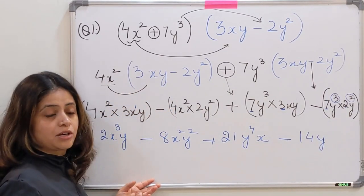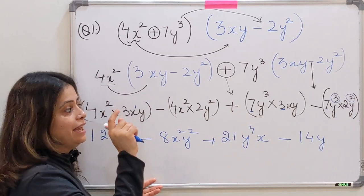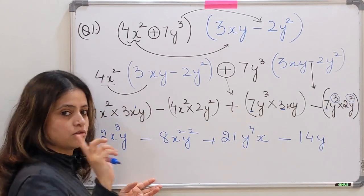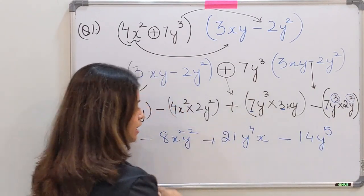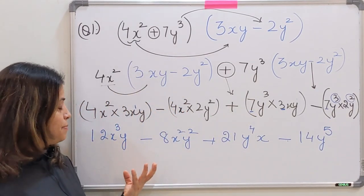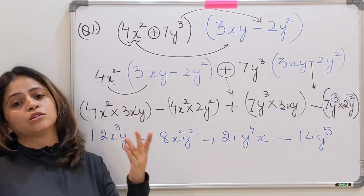Because according to exponential law, here we have to add the powers, not multiply. Right? So 3 plus 2 is 5. I hope this step is clear. Next step is always adding or solving the like terms, but first we have to search for like terms.